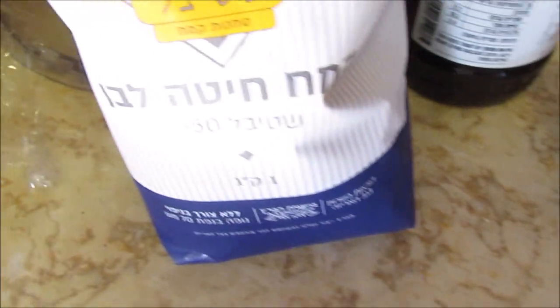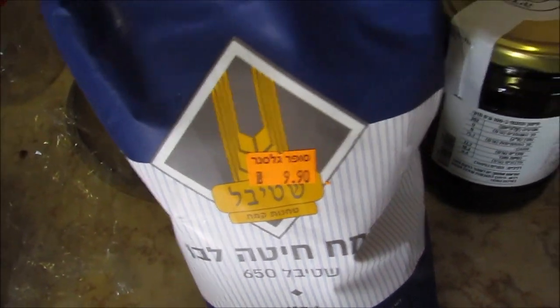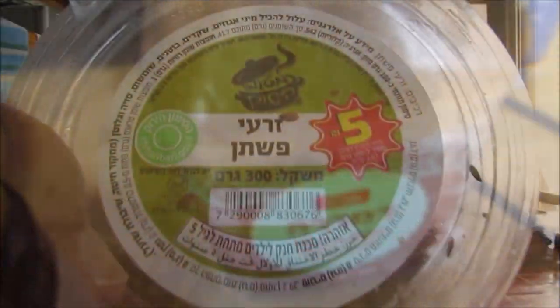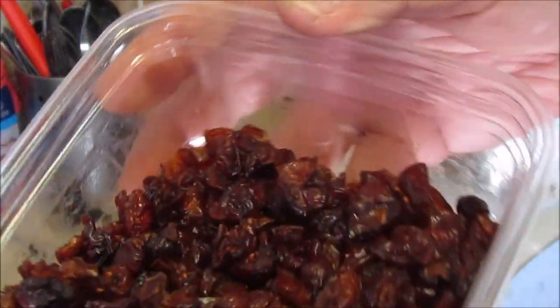What we needed? Half a pack of margarine, one egg, one kilogram of flour, date honey, sugar, flax seeds and cranberries.